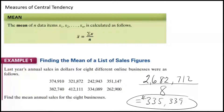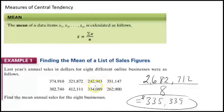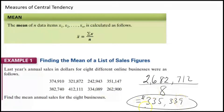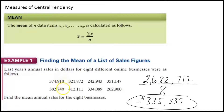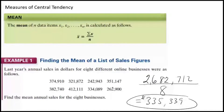Whenever you get an answer for mean, look at your data again and make sure it seems reasonable. My first value is a little bigger than that at 374,000; the next is a little smaller at 321,000. Without recalculating, that seems like a reasonable value. It certainly wouldn't hurt to add this up a couple of times to avoid silly mistakes, and make sure you do have eight values: one, two, three, four, five, six, seven, eight. So just like calculating a test average, when you find the mean you're finding the average of all the values.